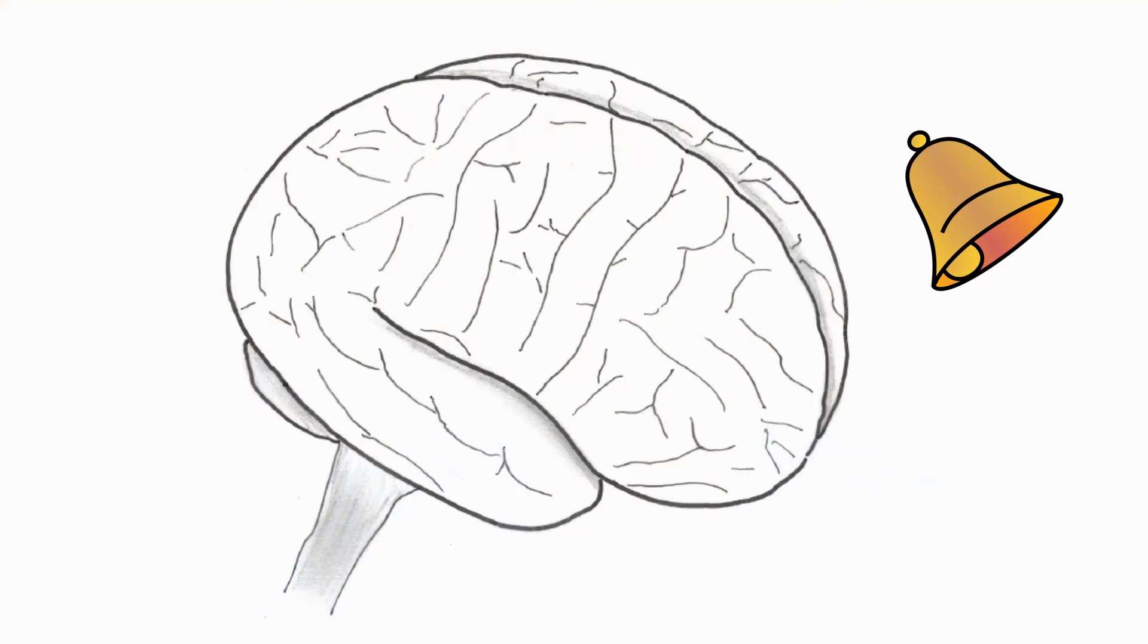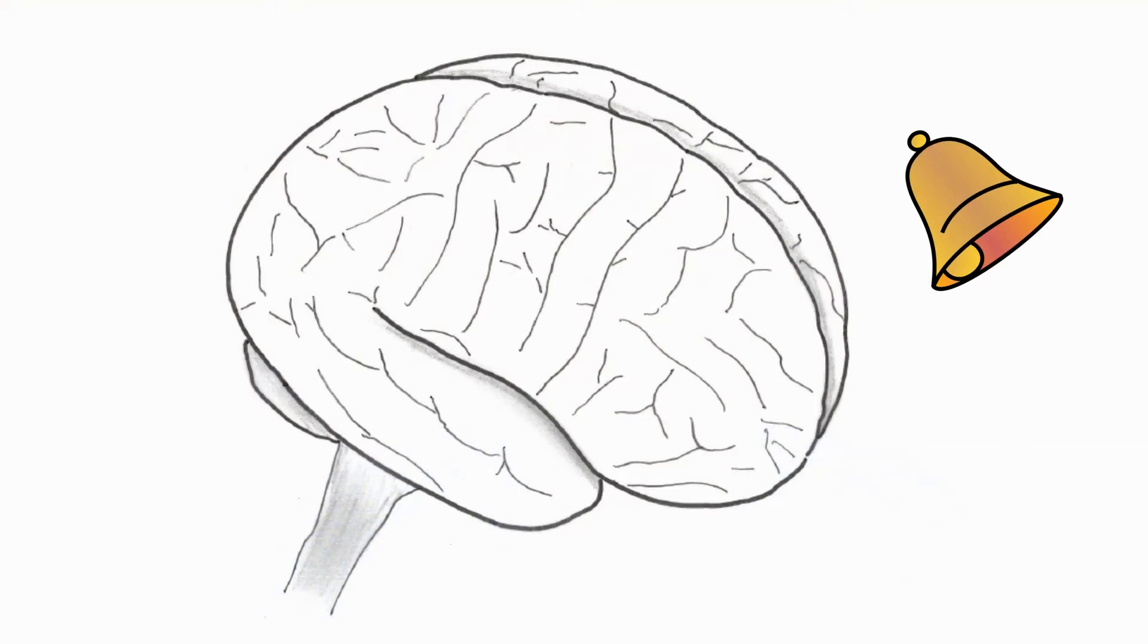In fact, when we see a picture of a bell, our visual cortex might increase its activity because we're processing what we see, but our auditory cortex is also likely to increase its activation, because of the strong association of this image to the sound of a bell.